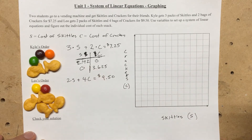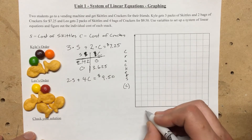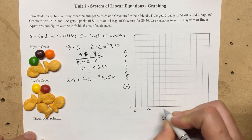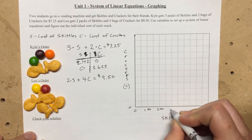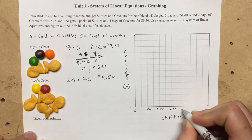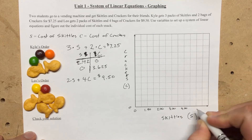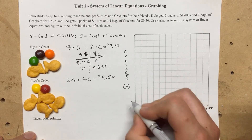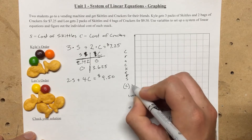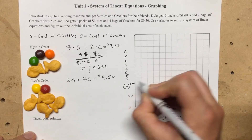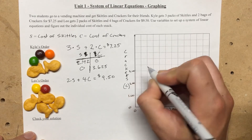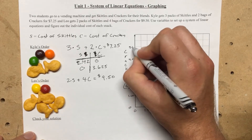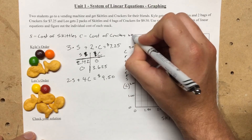Let's label our axes — every two grid lines will be one dollar. So we have zero, one dollar, two dollars, three dollars, four dollars, five dollars, six dollars going along the s axis. We'll do the same going up the c axis: one, two, three, four, five, and six.